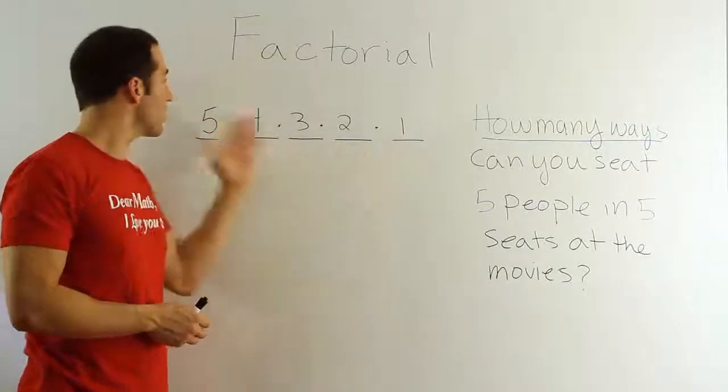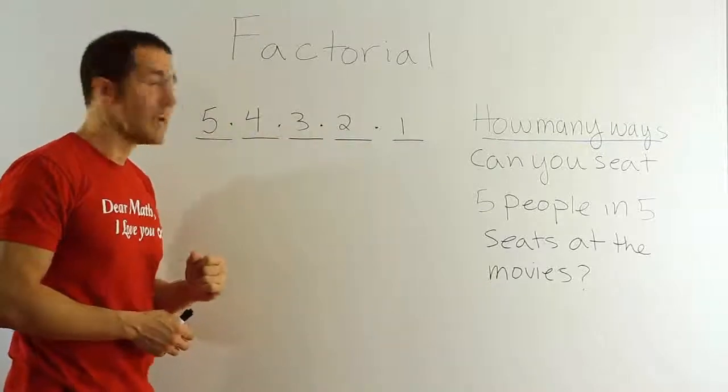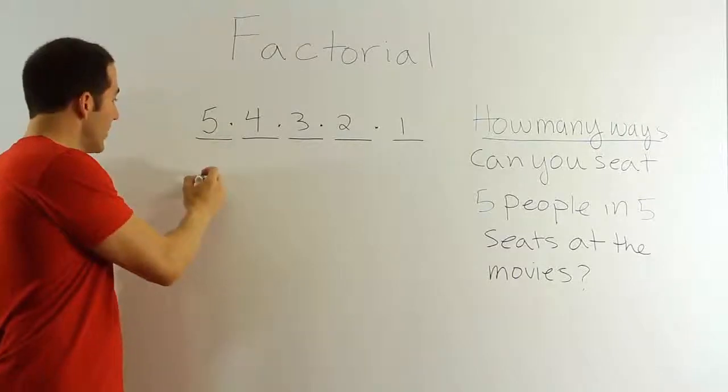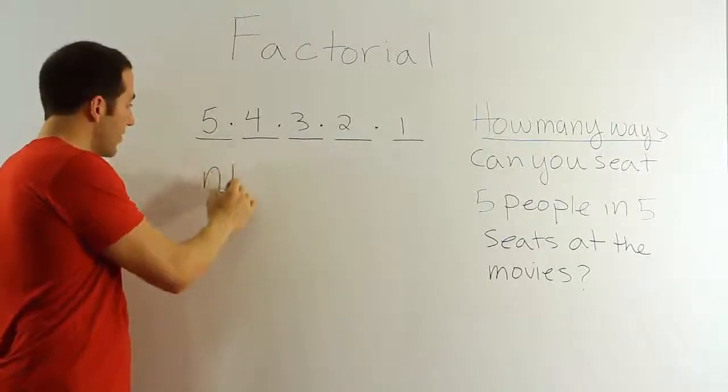So we're just counting down to one, and we're multiplying all the way as we go. And so that's the operation. It has notation like this. We'll use n factorial generically.